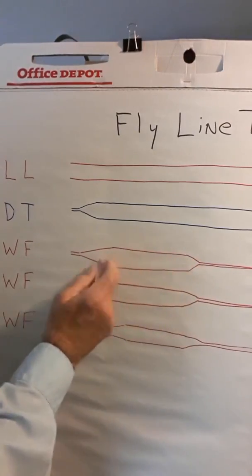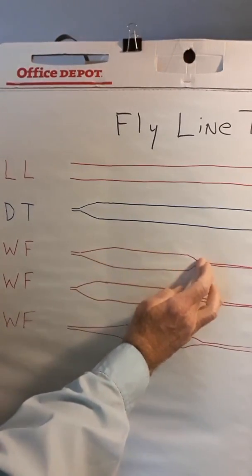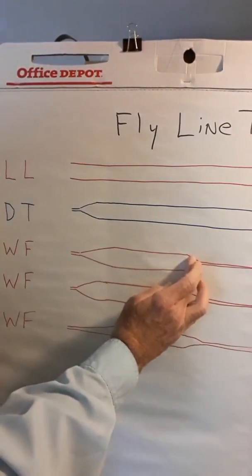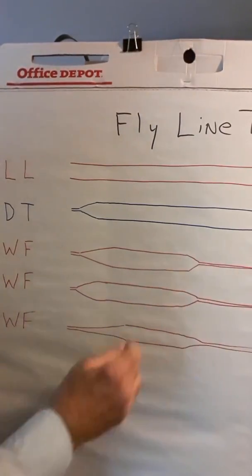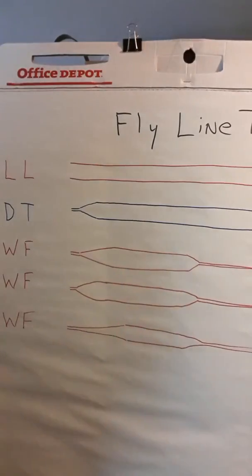And if you add those three components together, and you stop right here, this is considered the head of the fly line. And this, the rest of this, is just the running line.